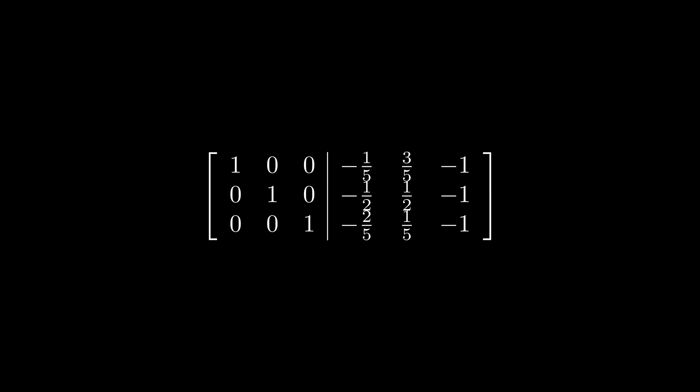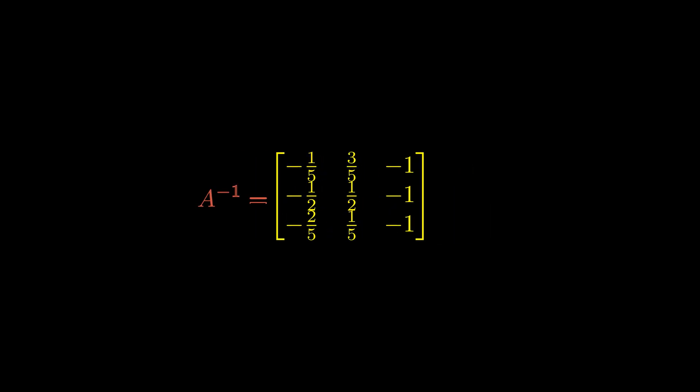Consider the first row: 1a plus 0d plus 0g equals negative 1 over 5, so a equals negative 1 over 5. Similarly, d equals negative 1 over 2 and g equals negative 2 over 5. Working through the other systems, b equals 3 over 5, e equals 1 over 2, h equals 1 over 5. The first entry on the right equals a, the second equals b, and so on — the right side is our inverse matrix.